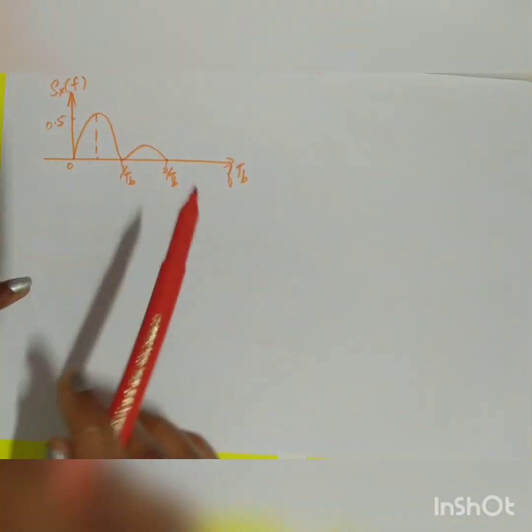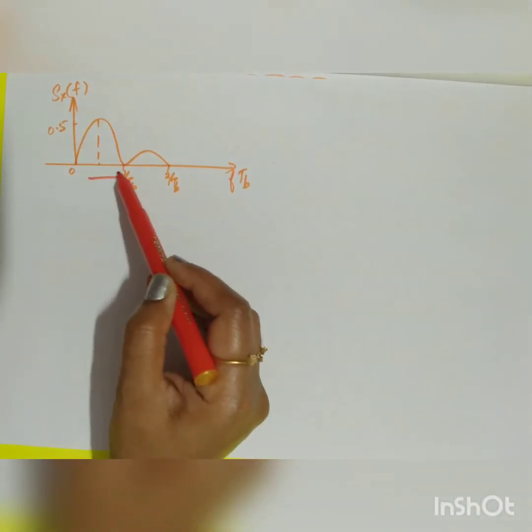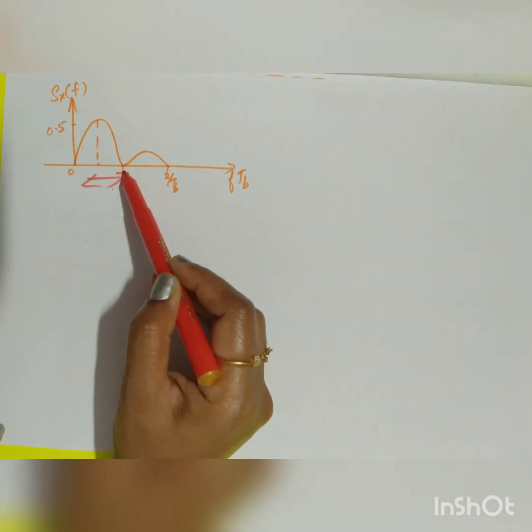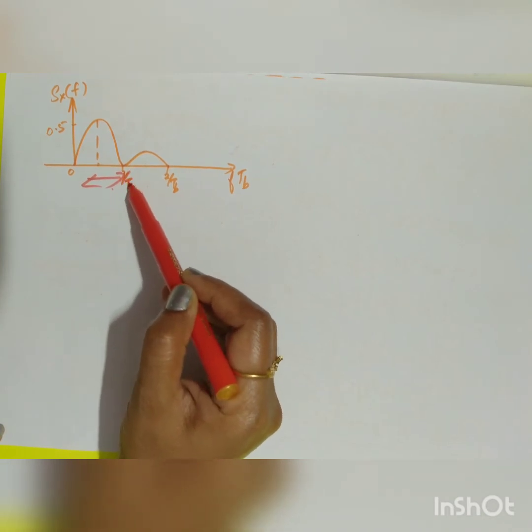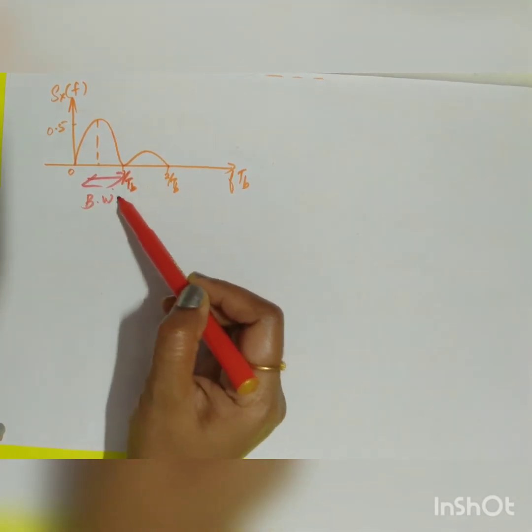The bandwidth of the Bipolar Non-Return-to-Zero format lies between 0 and 1/T_b, and the signal energy outside this range is negligible.